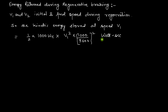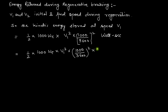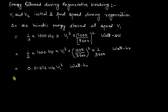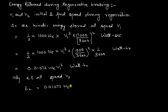Converting further to watt-hours by dividing by 3600, the expression becomes: E1 = ½ × 1000W × V1² × (1000/3600)² × (1/3600), which simplifies to 0.01072 × W × V1² watt-hours. Similarly, the kinetic energy at speed V2 is E2 = 0.01072 × W × V2², since only the speed has changed while the dead weight of the train remains the same.